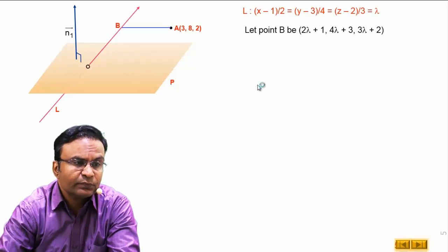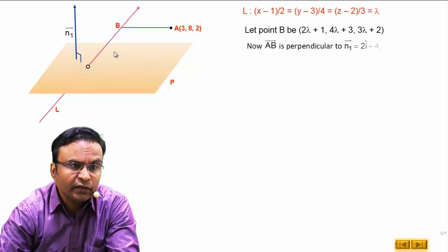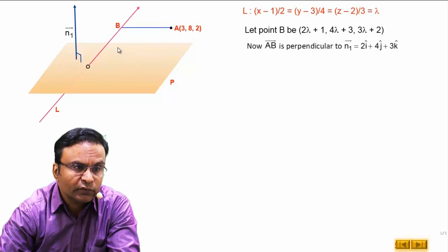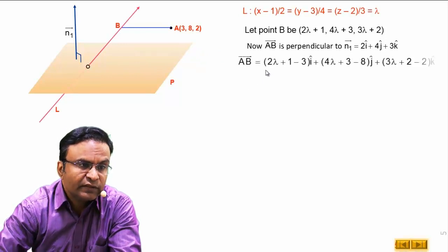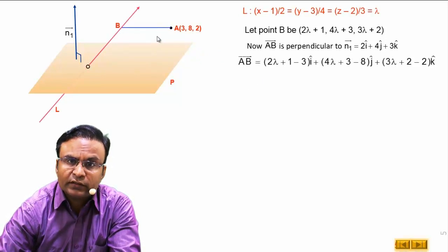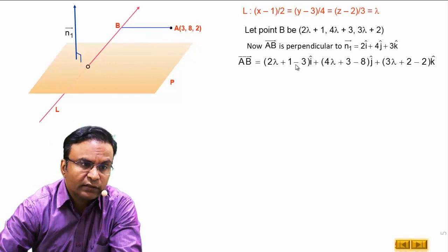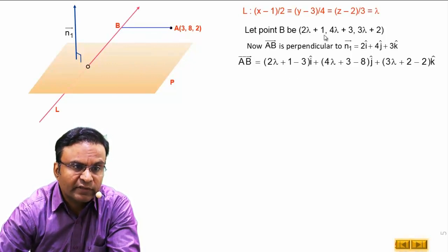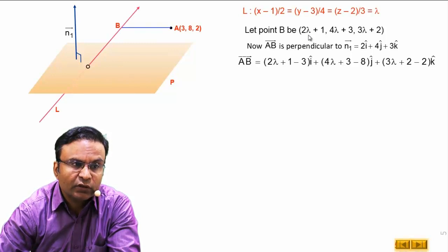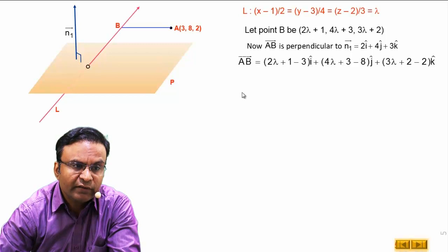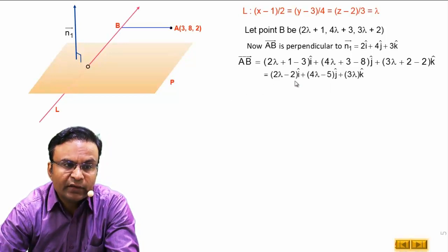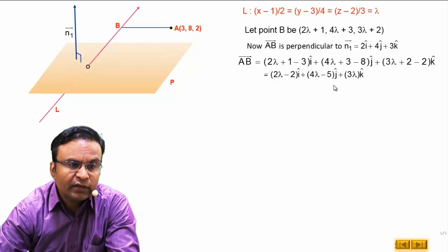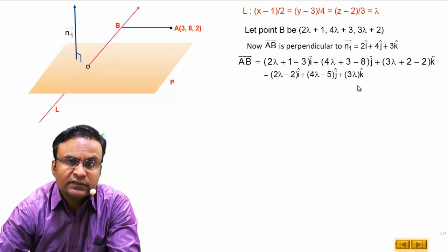How we get vector AB? Vector AB is a difference of position vectors of B and A. We are subtracting position vector of A from the position vector of B. We have vector AB is equal to this vector 2 lambda minus 2i plus 4 lambda minus 5j plus 3 lambda k.